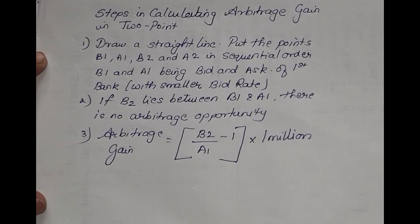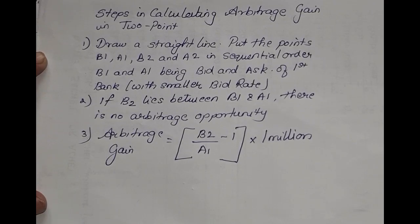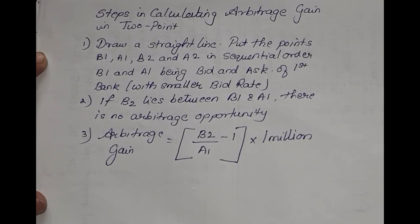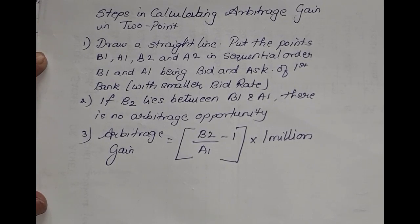So just three steps: first, make a number line; post a1, a2, b1, b2 on it. If b2 lies in between b1 and a1, there is no arbitrage opportunity. If not, there will always be an arbitrage opportunity, and the arbitrage gain can be found using the formula: b2 upon a1, minus 1, into 1 million. Now let us take up two sums to find and solve arbitrage gain.